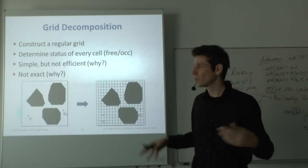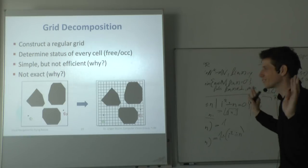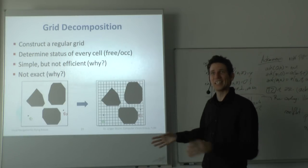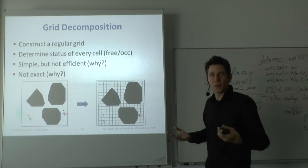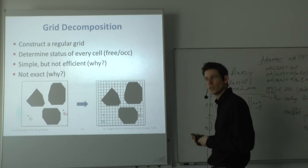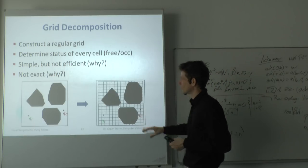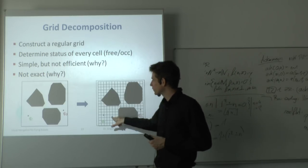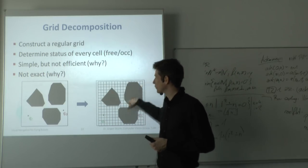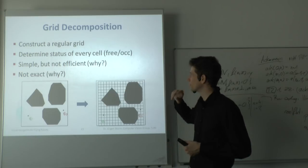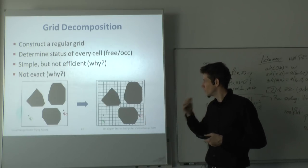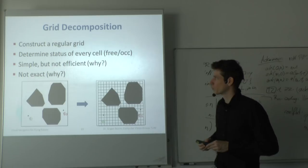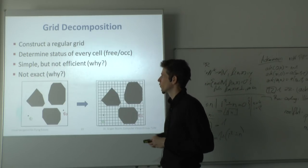Three frequently used sampling-based techniques are grid decomposition, roadmaps, and random trees. The idea behind grid decomposition is simple: take a regular grid in any dimension, overlay it on your map, and determine the status of every cell — free or occupied. This is easy but not very efficient for high dimensions, because you end up with lots of cells to evaluate. It's also not exact, because some cells are half-free and half-occupied.